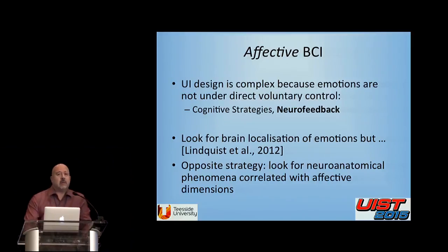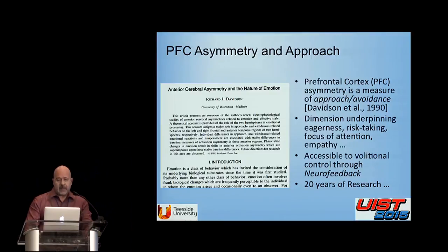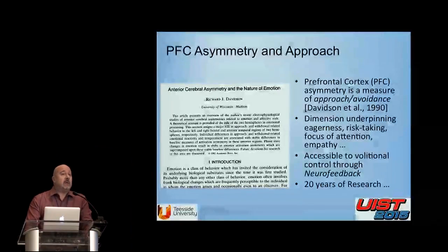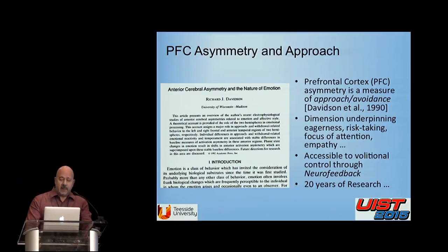Another option is to take an opposite strategy: start with something which has a neuroanatomical substrate and look if it correlates with an affective dimension. That happens to be the case with brain asymmetry. If you take the prefrontal cortex specifically, there's been a lot of work dedicated to asymmetry in the prefrontal cortex, much of that pioneered by Richard Davidson.